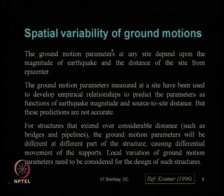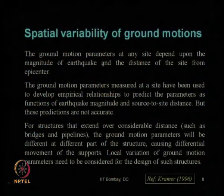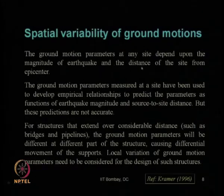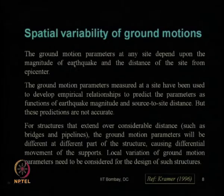In today's lecture we will start with the spatial variability of ground motion. Ground motion varies spatially — in the horizontal direction as it travels from one place to another. Ground motion parameters at any site depend on the magnitude of the earthquake and the distance of the site from the epicenter. Moving further from the epicenter, ground motion parameters keep decreasing; being close to the epicenter gives larger values.